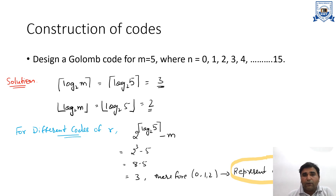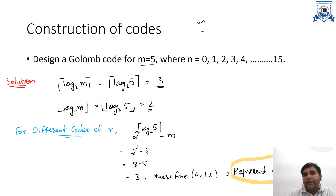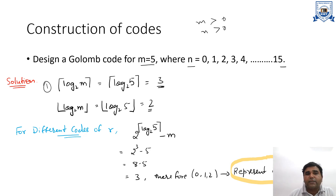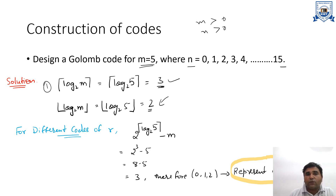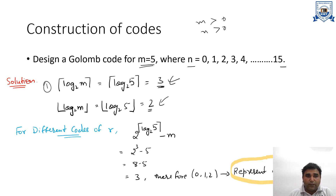Suppose we have m equals to 5. We need to design a Golomb code for m equal to 5, where n equals 0, 1, 2, 3, 4 up to 15. First, we have to find log base 2 of m in both the ceiling and floor functions. The ceiling function of log base 2 of 5 is 3, and the floor function of log base 2 of 5 is 2. These values will help us find the Golomb codewords.